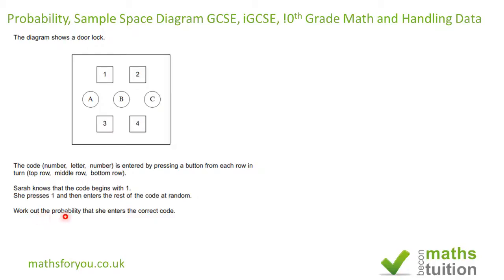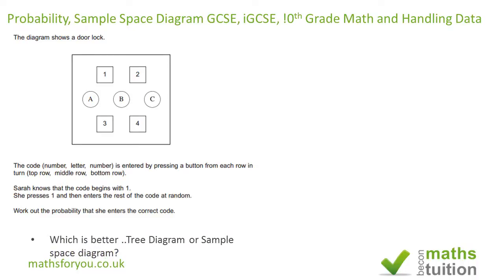What is the probability that she enters the correct code? What comes to mind is: do I use a tree diagram or a sample space diagram? I think on balance the sample space diagram is the better alternative here, and you don't need to spend as much time on it.